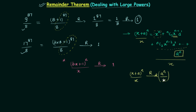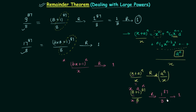I will verify the first example using this result. We have (8 + 1) raised to power 87 divided by 8. Here x = 8, a = 1, and n = 87. So the remainder is a^n divided by x, which is 1 raised to power 87 divided by 8. Since 1 raised to any power is 1, and 1 divided by 8 gives remainder 1, the answer is 1.